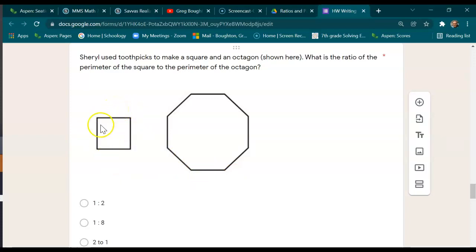So it doesn't matter what number we put in there. If the toothpick was two inches long, it would be two all the way around. And it would have the exact same ratio as if the toothpick were five inches long and everything was a five. The ratios would always be the same.